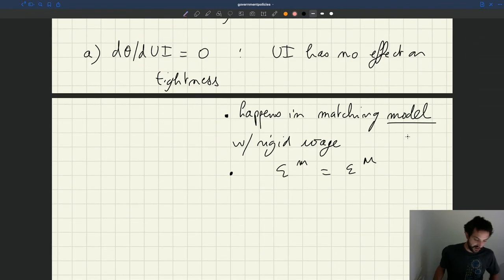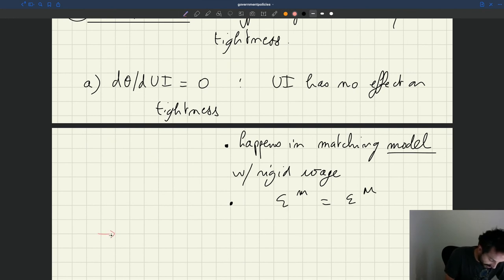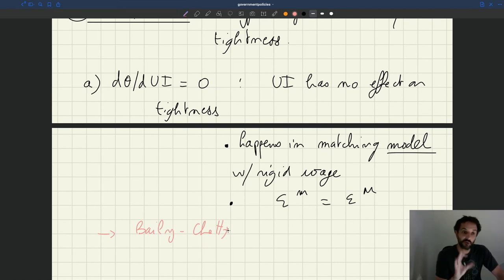So the key thing is that if UI has no effect on tightness, actually, once again, the Baily-Chetty formula remains valid. And so what you learn in microeconomics or in public finance will still apply to a macro setup.